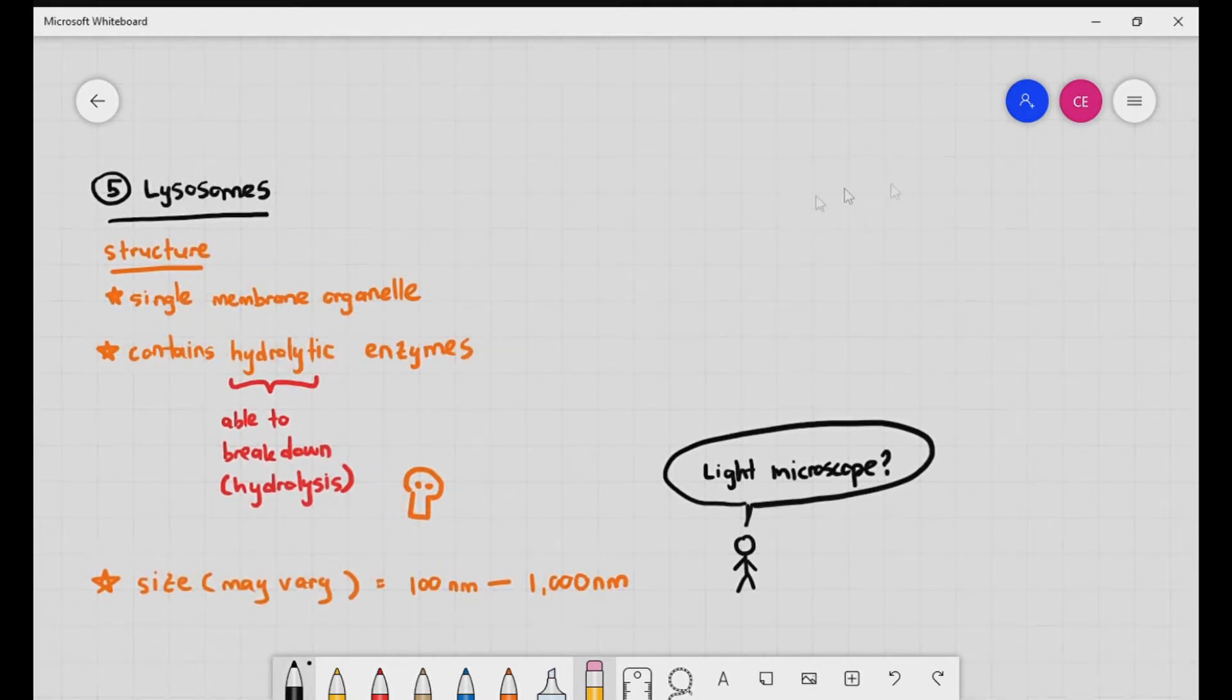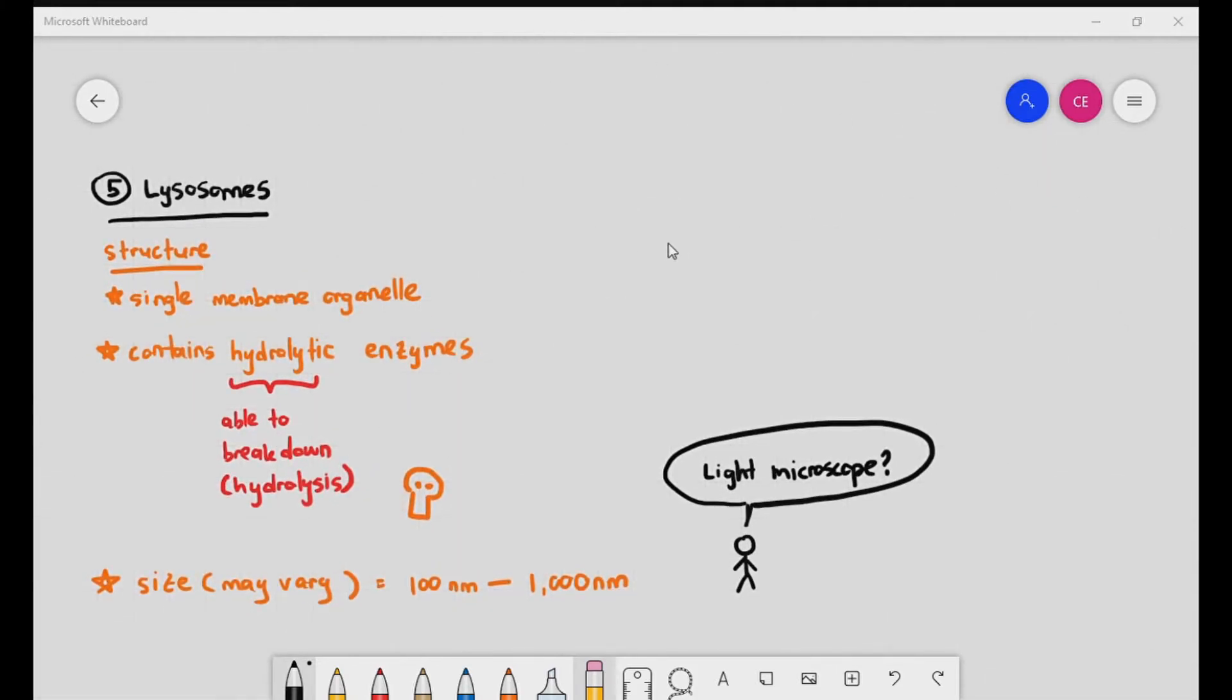What do you think? Immediately some students will say yes, I will be able to see the lysosome because the resolution of light microscope is 200 nanometers and lysosome can go up to a thousand nanometers. Now if we were to take a cell and look at its lysosome, how will it look like?